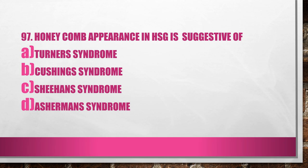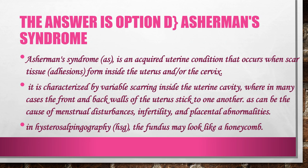Question 97. Honeycomb appearance in HSG is suggestive of: A. Eterna syndrome, B. Cushing syndrome, C. Sheehan syndrome, D. Asherman syndrome. Answer is Option D, Asherman syndrome. Asherman syndrome is an acquired uterine condition where scar tissue or adhesions form inside the uterus or cervix, characterized by variable scarring where the front and back wall of the uterus stick together, causing menstrual disturbances, infertility and placental abnormality. In Hysterosalpingography, the fundus may look like a honeycomb.